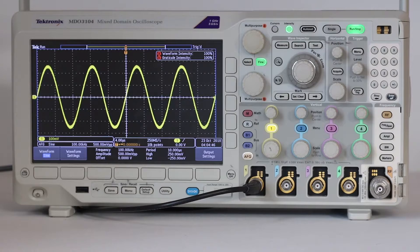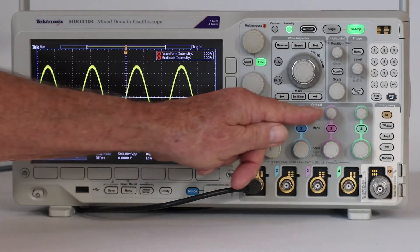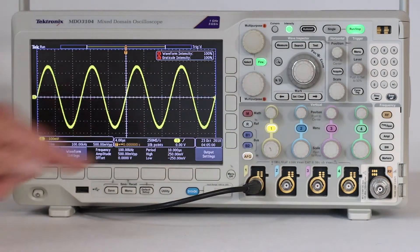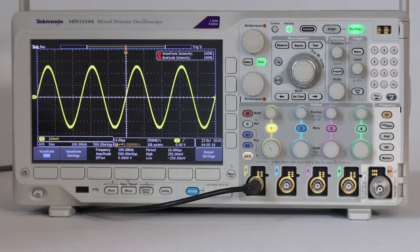The other set of position and scale knobs is located above and below respectively each of the channel buttons. If the oscilloscope, like this MDO 3104, has four channels, there are four position knobs above the four channel buttons and four scale knobs below.